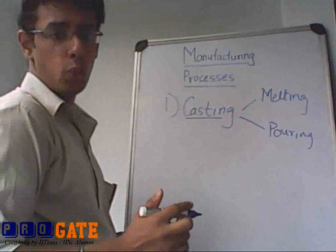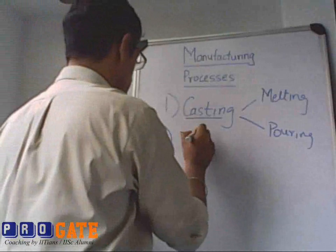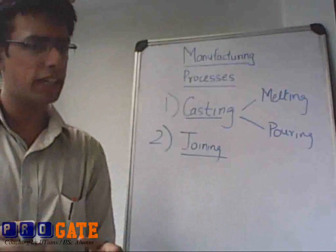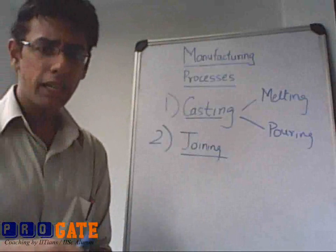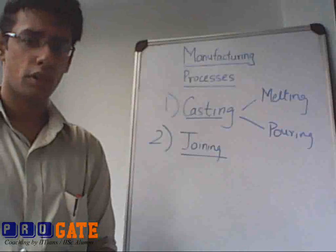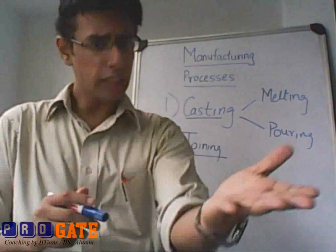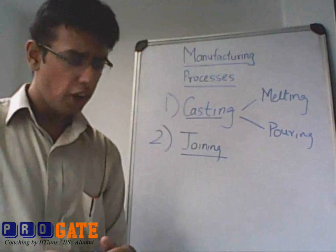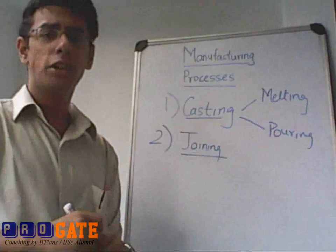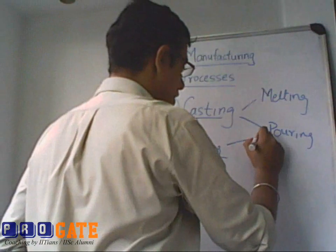After casting, we will move on to one more very important aspect of manufacturing processes which is called joining. Welding is one example of joining. Joining has got three major parts. The first one being soldering. Soldering is basically a low temperature process in which two things are joined together by local application of heat — for example, repairing watches or soldering components on a PCB.